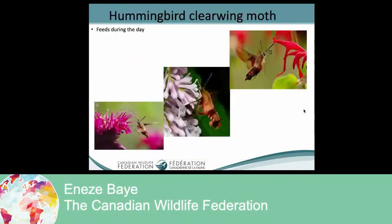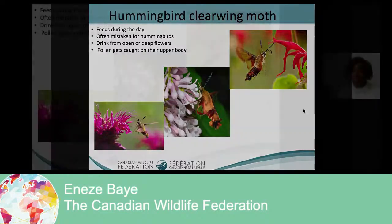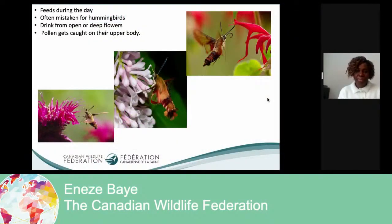And the last pollinator is the moth. The hummingbird clearwing moth is nocturnal but actually functions during the day and night. They love flowers that are deep and they love a variety of flowers. And sometimes they look like hummingbirds — sometimes they're mistaken for the hummingbird that we saw in the other slide.